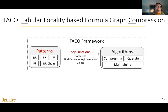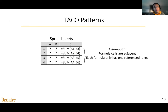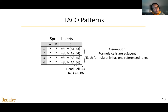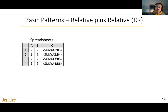In this talk, let me start with the TOKEL patterns and the algorithms for implementing the key functions. TOKEL patterns consider compressing the dependencies of adjacent formula cells. For each pattern, it assumes each formula only has one reference range. But the TOKEL framework can apply the TOKEL patterns multiple times to compress the case when a formula has multiple referenced ranges. Each range is determined by two cells: the head cell, which is on the top left, and the tail cell, which is on the bottom right.